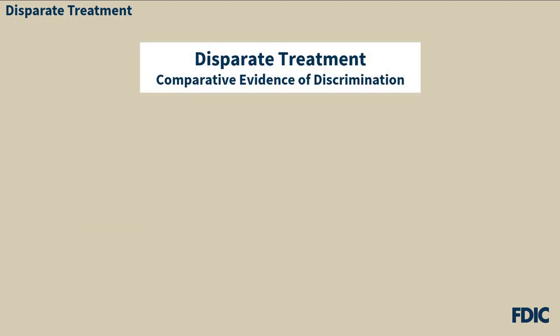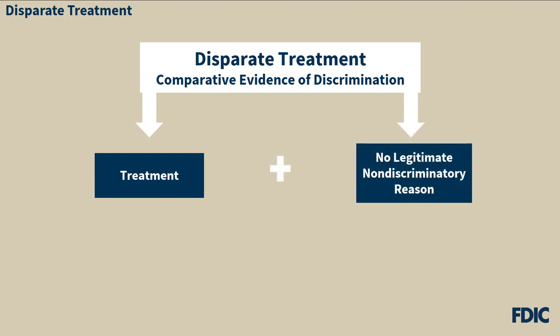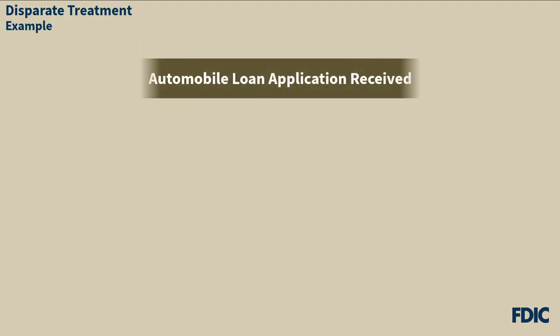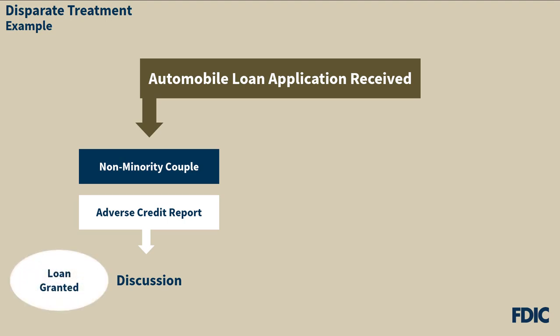Disparate treatment also occurs when evidence of discrimination arises when a lender treats a credit applicant differently on a prohibited basis and the differences in treatment cannot be explained by a legitimate, non-discriminatory reason. It does not require evidence that the treatment was motivated by prejudice or that the creditor intended to discriminate against a particular person. For example, a non-minority couple applied for an automobile loan. The lender found adverse information in the couple's credit report, discussed it with them, determined the adverse information was incorrect, and granted the loan.